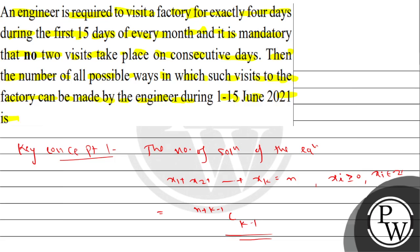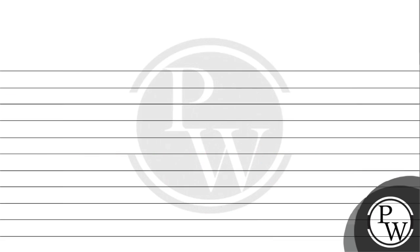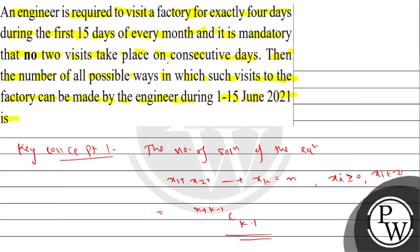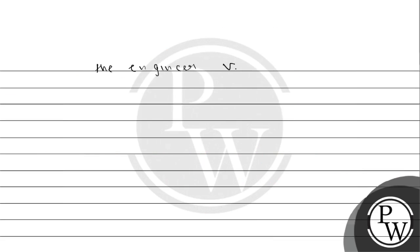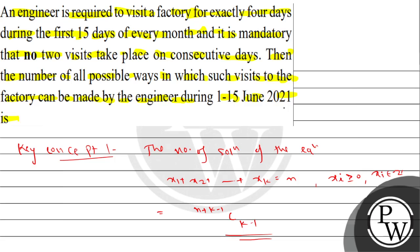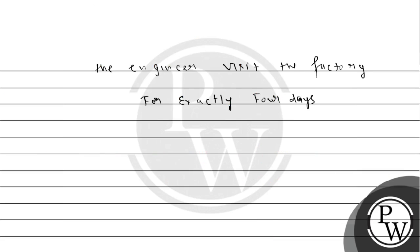The engineer will visit for 15 days but only visit 4 days out of those 15 days. We need to choose 4 days out of 15 days such that no visit takes place on consecutive days.